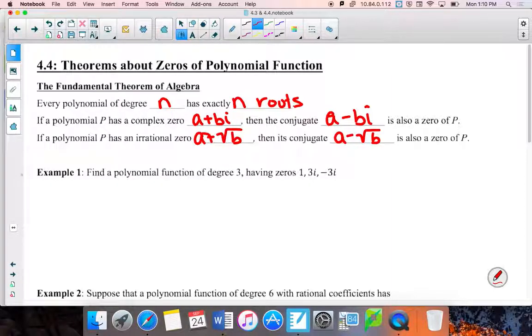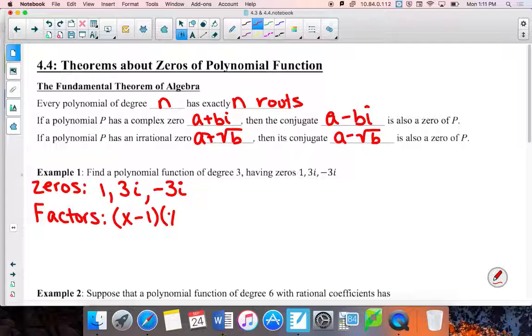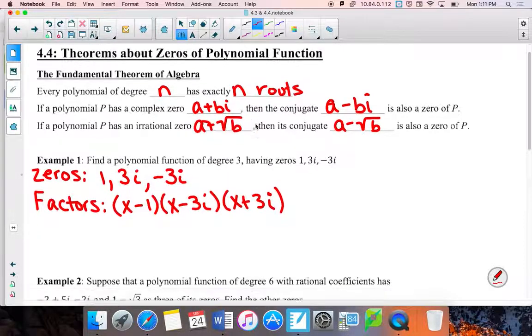All right, let's do this first guy together. Find a polynomial of degree 3 having zeros. So the zeros are 1, 3i, negative 3i. Now they already have all the zeros there. 3i and negative 3i, those are kind of weird, so they have to travel together, and they are conjugates, so life is good. First thing we want to do is we want to write those as factors. x minus 1, x minus 3i, x plus 3i. So there's a difference between a zero and a factor. We want to be careful that we actually write them differently.